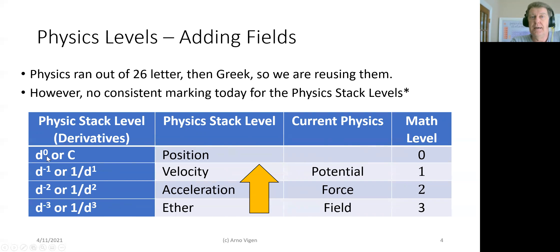In physics also, the exponents go downward. It's d to the minus one, d to the minus two, which is one over distance, one over distance squared, one over distance cubed. But these still follow the basic level of math level zero, one, two, and now three.